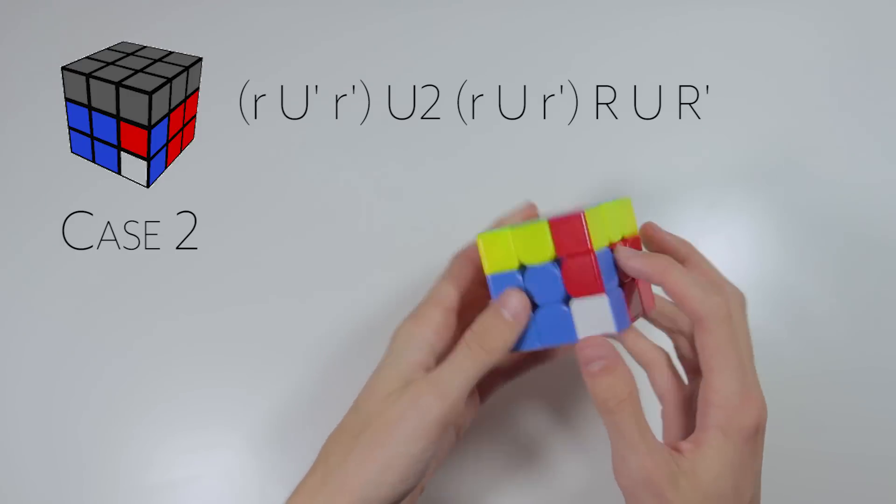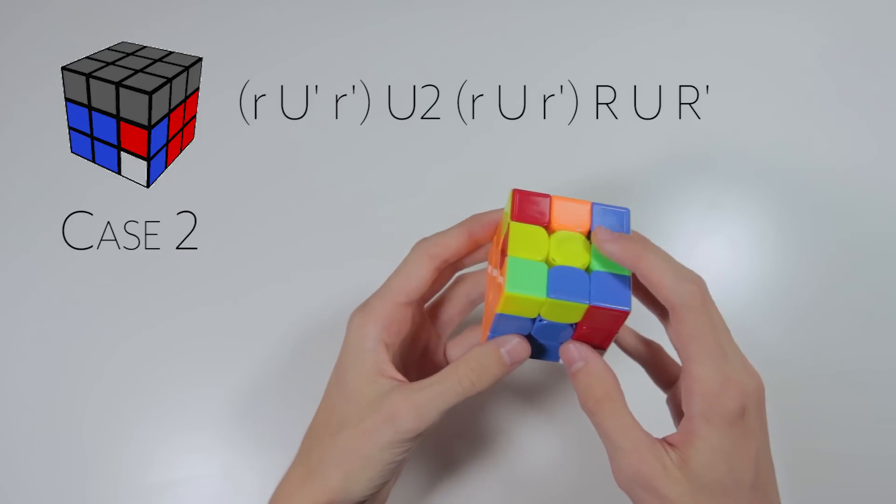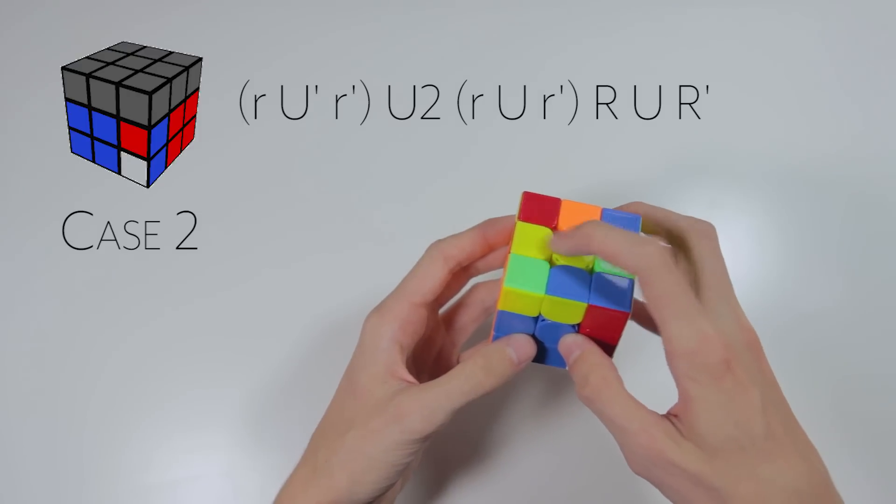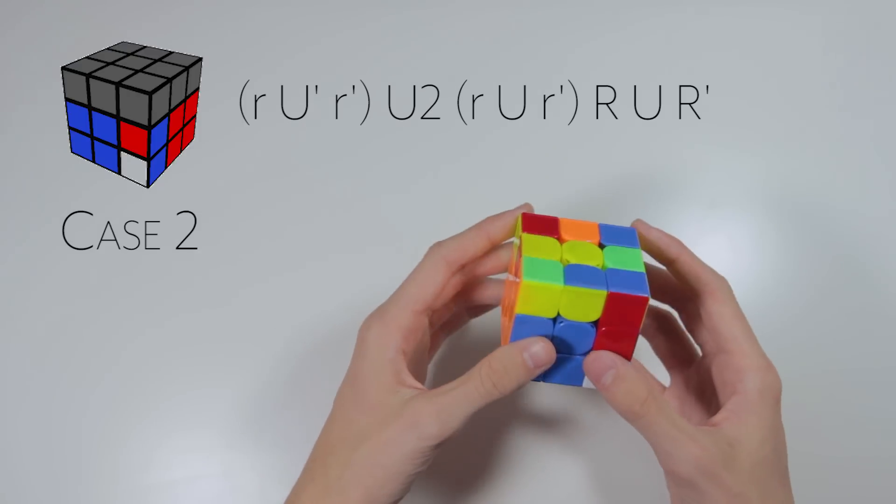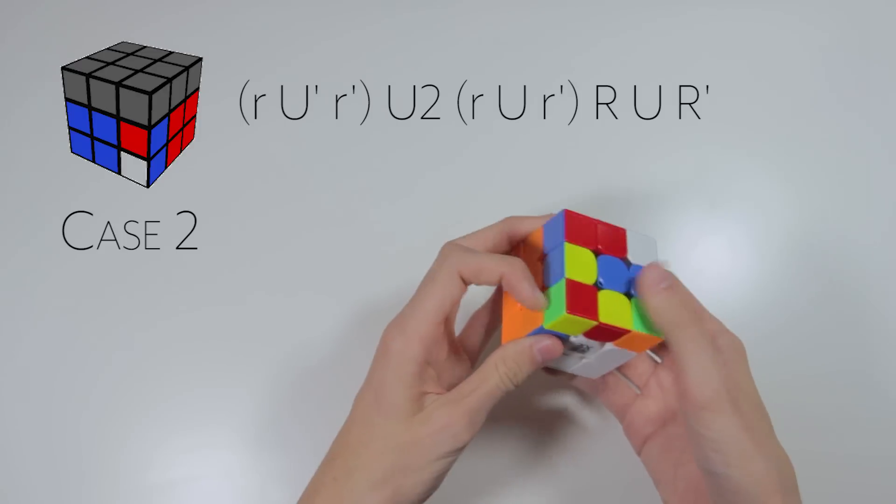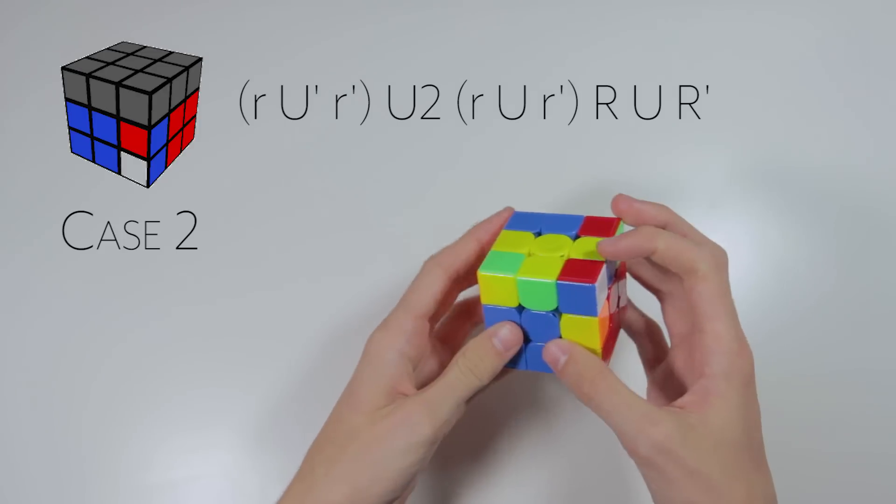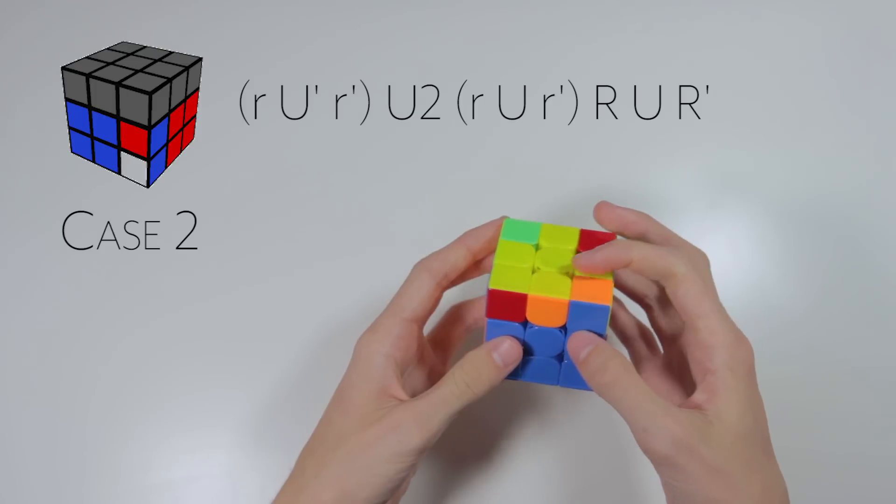This next case is the inverse of the previous one, and in order to manipulate EO you put your one oriented edge on the left. Here's what the algorithm looks like slowly. And quickly.